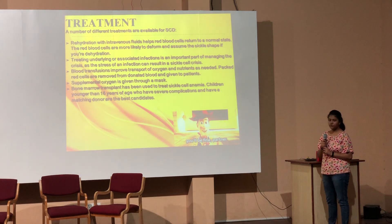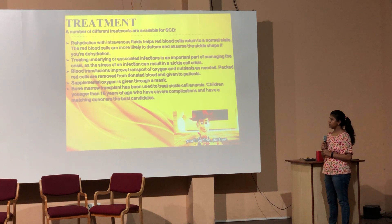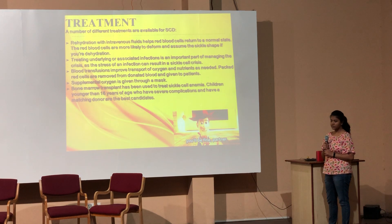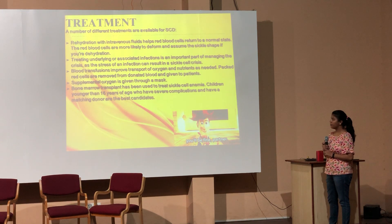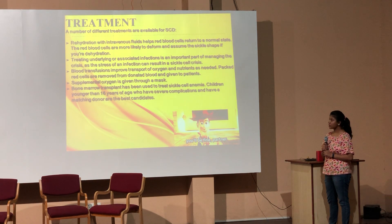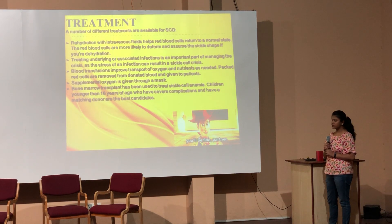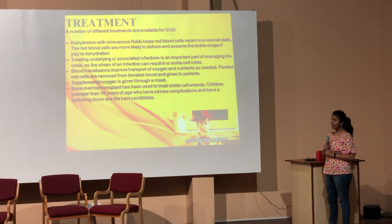Treatment: Rehydration with IV fluids helps the RBCs to retain their shape. Treating underlying or associated infection is an important part of managing crisis, as any stress from infection may worsen sickle cell disease. Blood transfusions improve oxygen and nutrients as needed — packed RBCs are removed from donated blood and given to patients. Supplemental oxygen is given through a mask. Bone marrow transplant is suggested for children younger than 16 with severe complications who have a matching bone marrow donor.